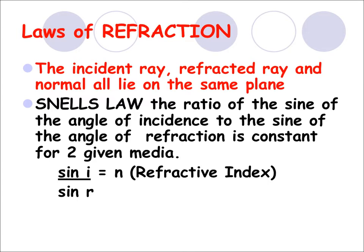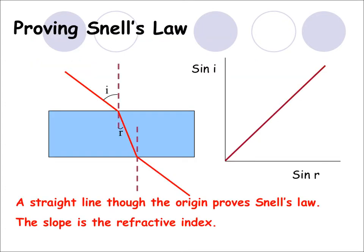Snell's law is the second law of refraction, and this states that there's a ratio between the sine of the angle of incidence and the sine of the angle of refraction, which is constant. The name we give to this constant is the refractive index. It's to do with the ratio of the speeds of the wave as they travel from one medium to the other. This is the experiment, and the slope of sine i over sine r is the refractive index.